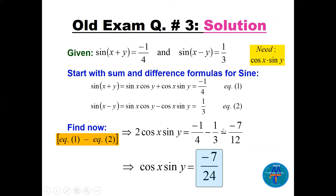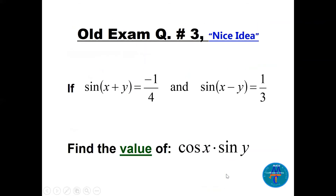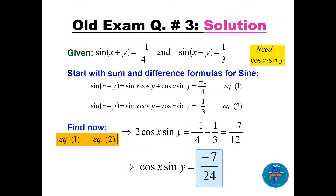Dividing both sides by 2, we get cos(x)·sin(y) = −7/24. That is the answer.